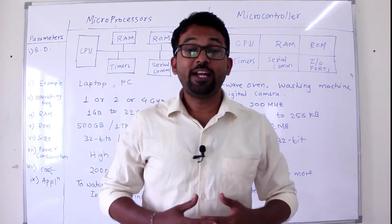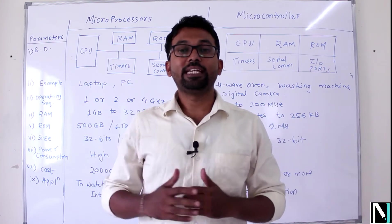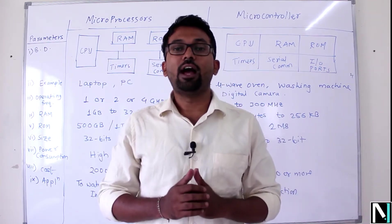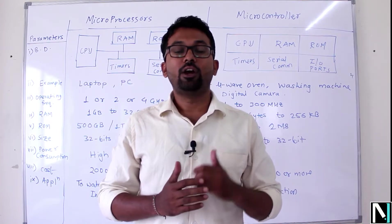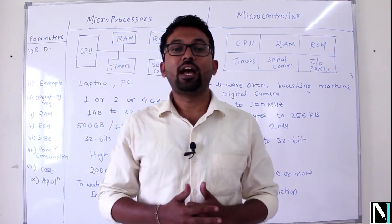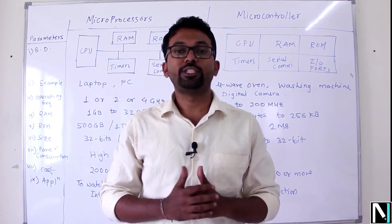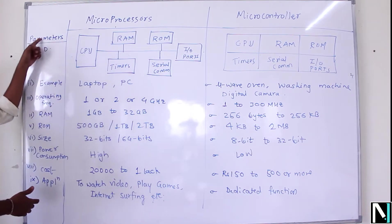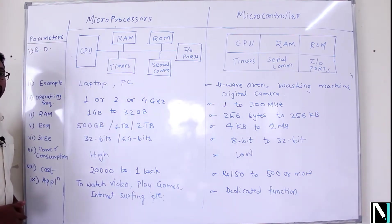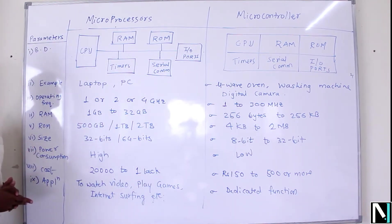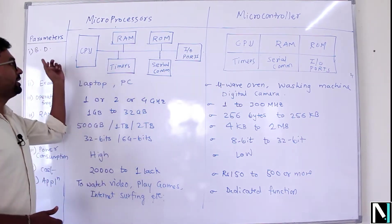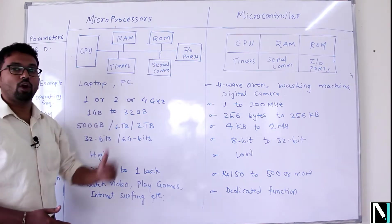I have already written the basic differences between microprocessor and microcontroller on the board. I have written some parameters on the left-hand side on which I am going to compare the two systems — take down the snapshot. On the left-hand side you can see certain parameters on the basis of which I am going to compare between microprocessor and microcontroller. The first parameter is the block diagram.